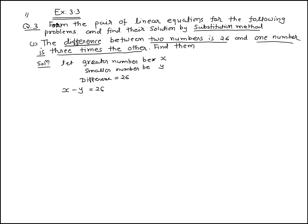The difference between the two numbers — greater number minus smaller number — is equal to 26. One number is equal to three times the other smaller number. That means the greater number x is three times the smaller number y.